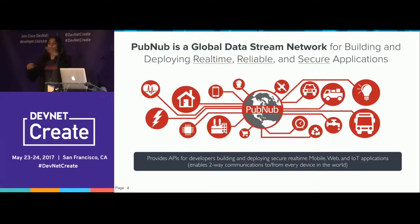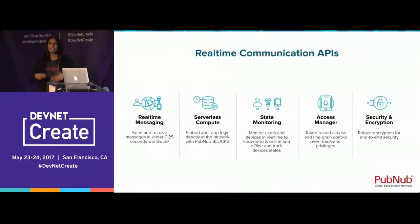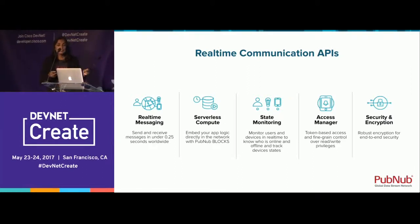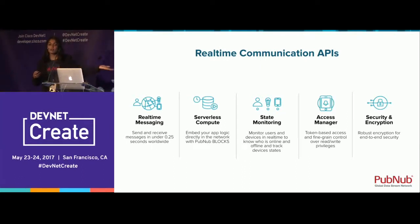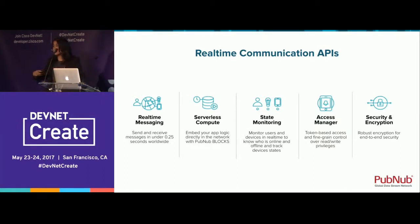PubNub provides an easy way to build these real-time apps. We provide a global network that devices can connect to and send messages between each other — whether it's a hundred devices or a million devices, PubNub connects them all. We provide this through real-time APIs for developers. If you're building a chat application, you can send a message using our publish API, and the person receiving it uses our subscribe API. You can show who's online or offline using our presence API, or do in-stream processing — for example, translating a message mid-stream if the recipient only understands Mandarin.